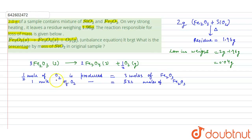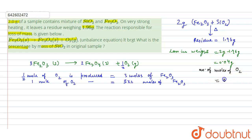The moles of oxygen evolved from this sample can be calculated from the loss in weight divided by the molecular weight of oxygen. The number of moles of oxygen equals 0.04 grams divided by 32 grams per mole, which equals 0.00125 moles.